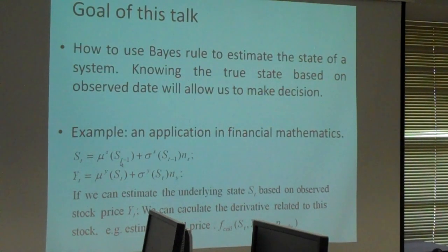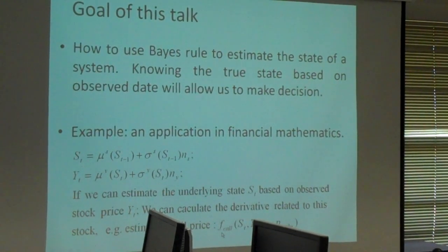And this state also evolves against time. So knowing the stock price every time, we want to estimate the underlying state st. Why we are so interested in this st is we can calculate some interesting results based on this st. One example is the derivative related to stock. One example is an option.